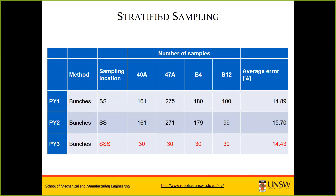We need to think about how we can reduce the amount of sampling. One thing we undertook was to study how the amount of sampling affects results. We specifically investigated stratified sampling in year three. We took a yield map from a yield monitor from year two at harvest, divided it into three regions of low, medium, and high yield, then selected randomly 10 locations in each region and distributed the samples for year three according to that yield map.